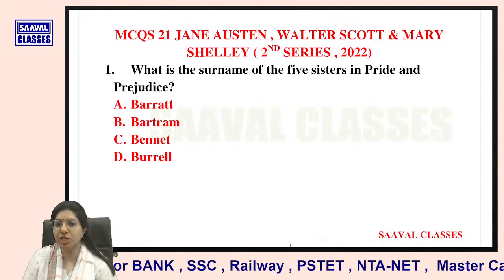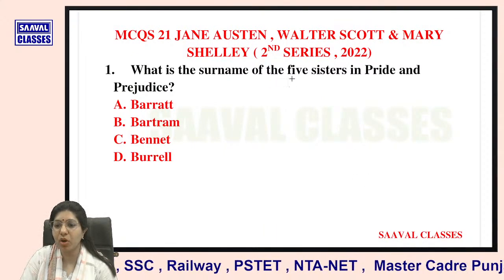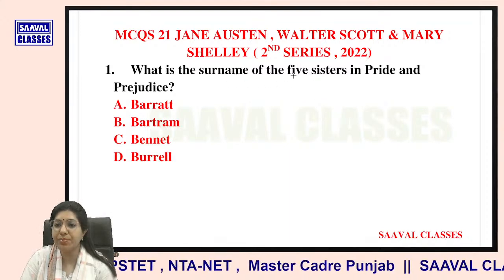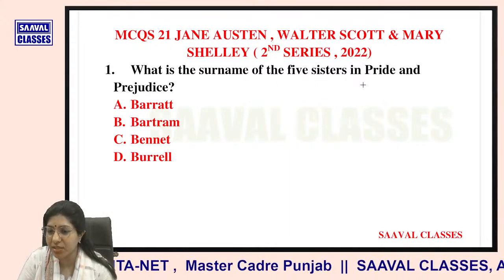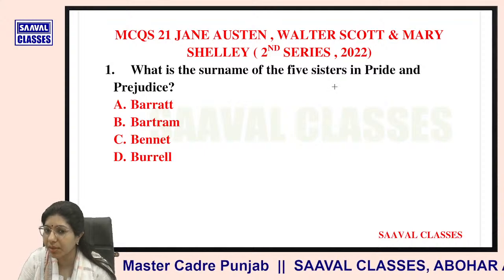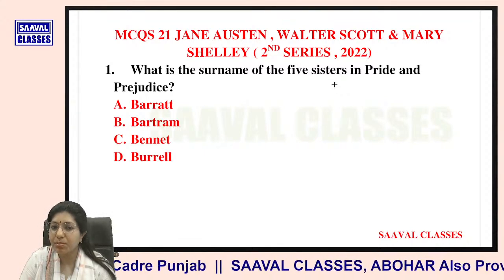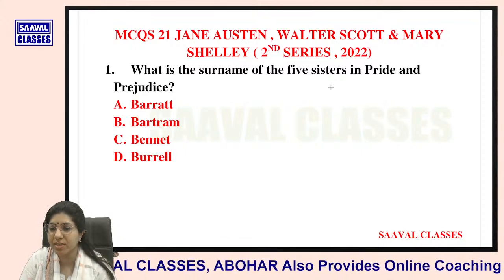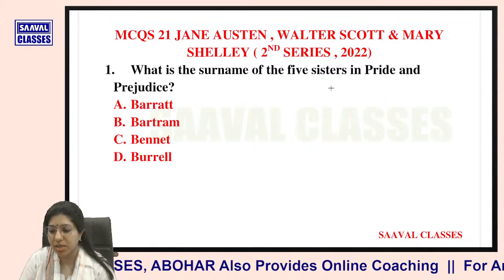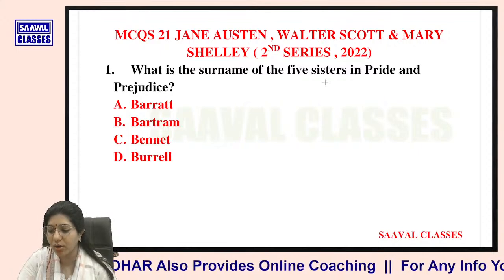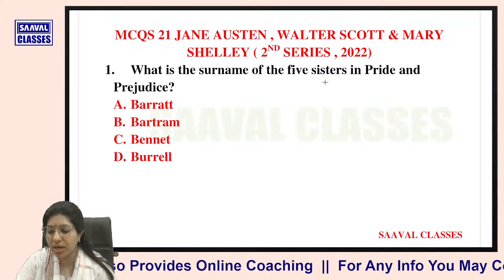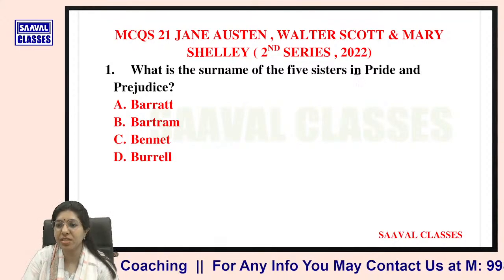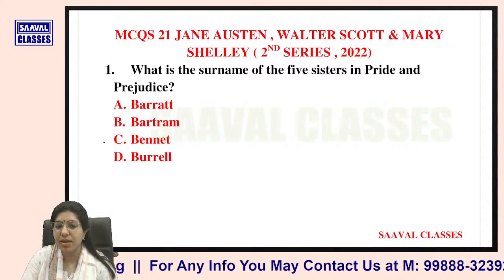First question: What is the surname of the five sisters in Pride and Prejudice? The options are Barrett, Bertram, Bennett, and Beryl. Very easy question — you know the answer even without the options. The surname of the five sisters in Pride and Prejudice is Bennett. It's the Bennett family, and there are five sisters.